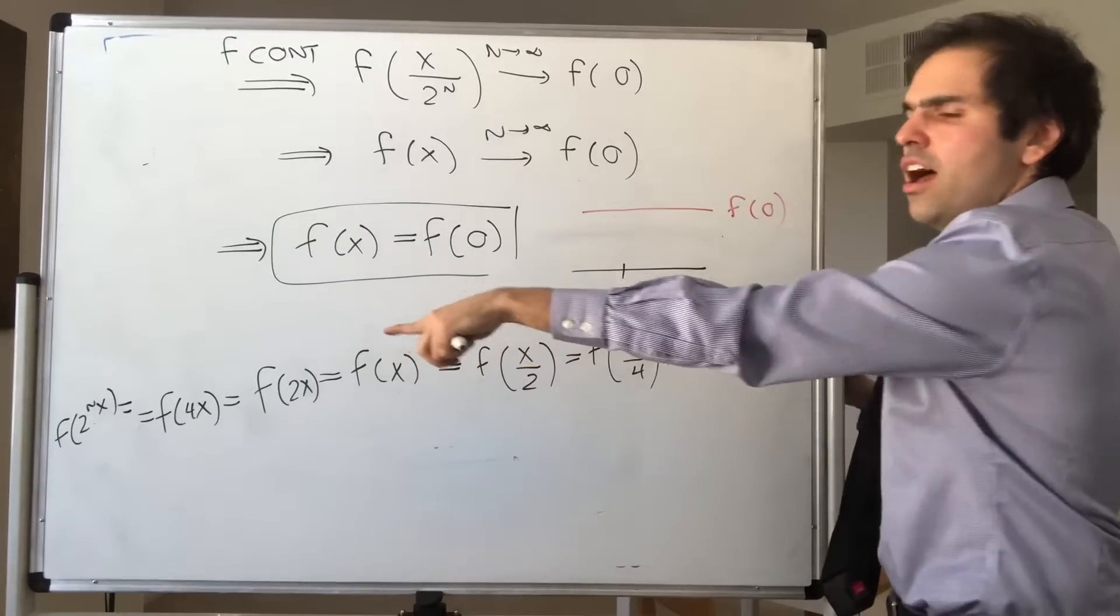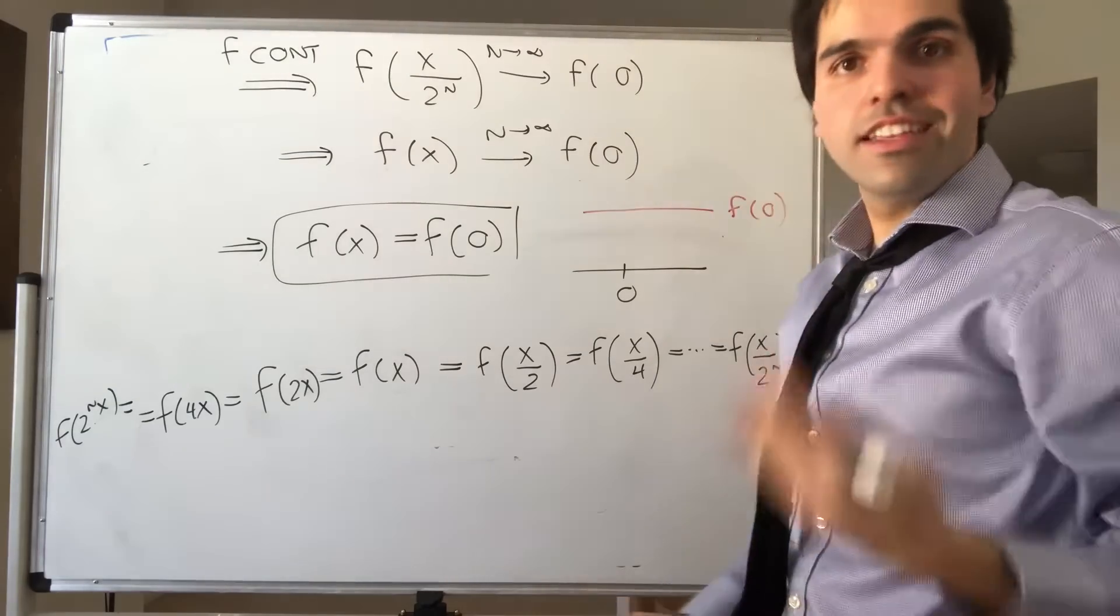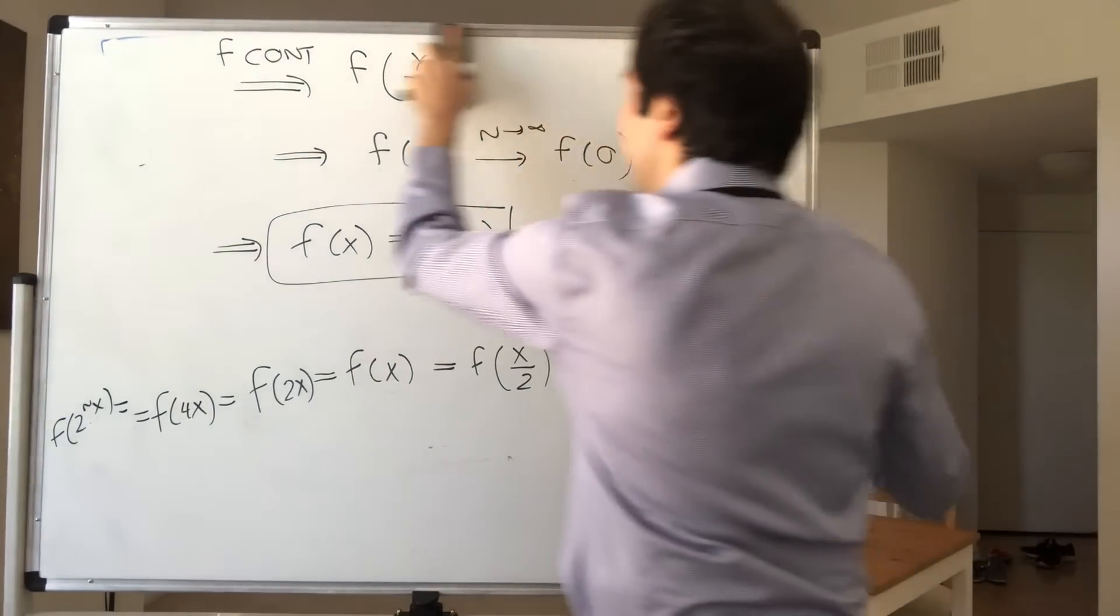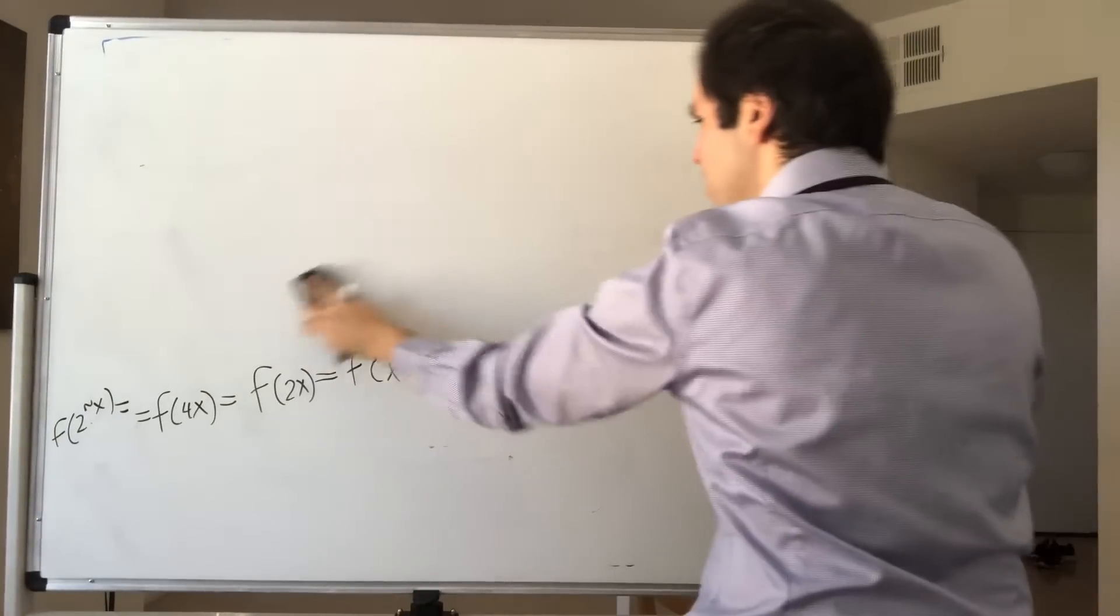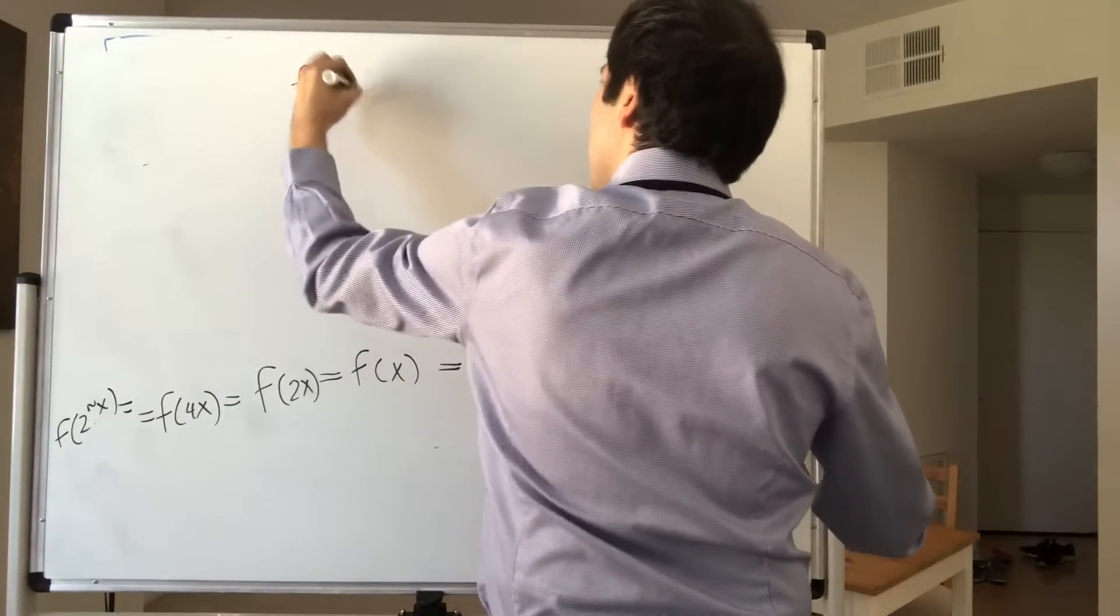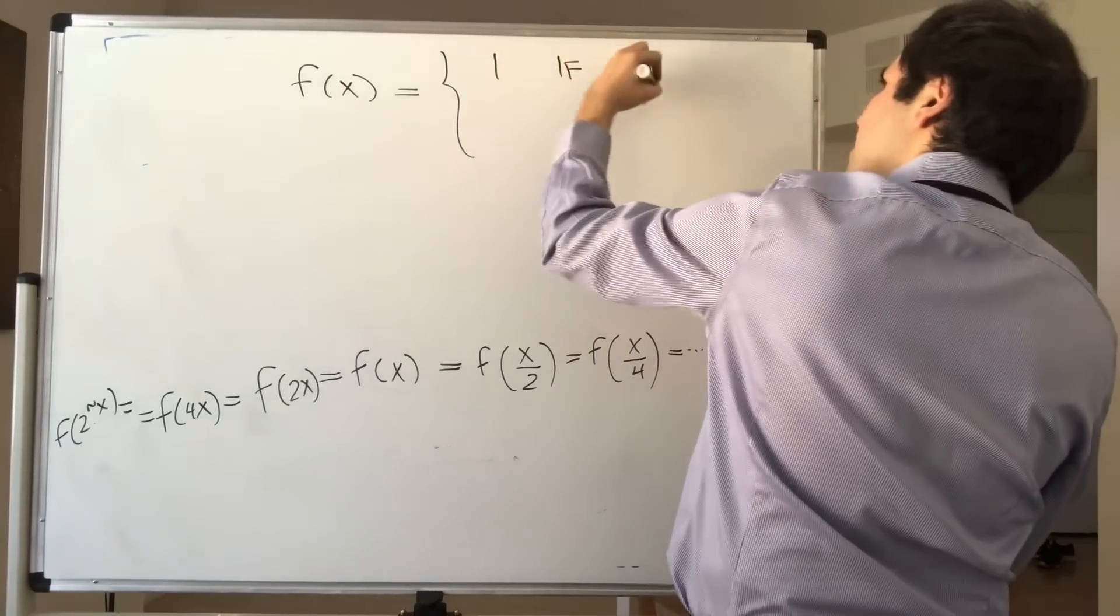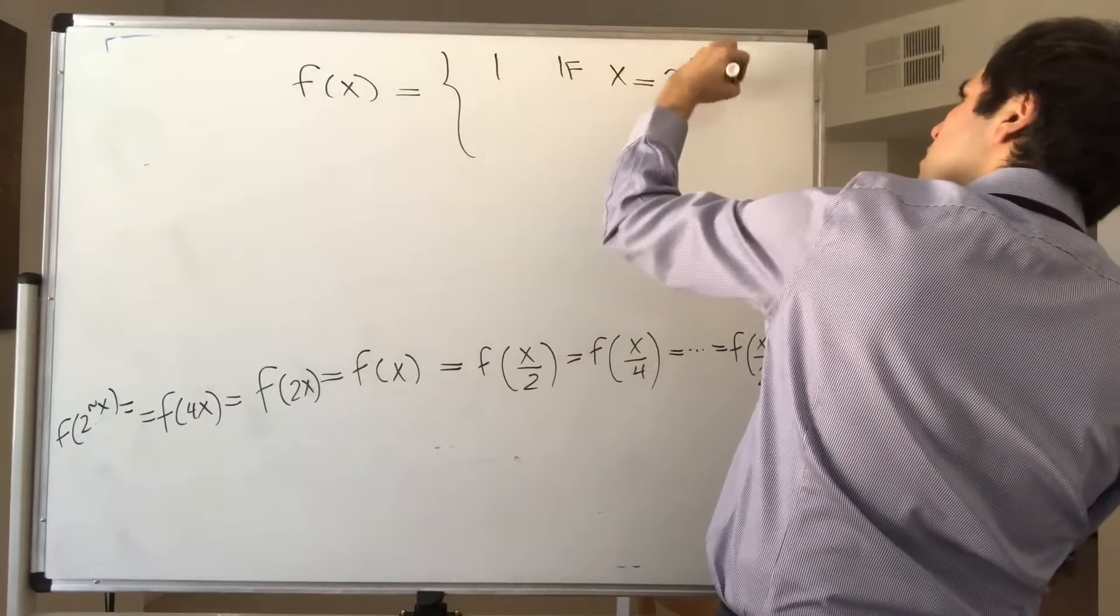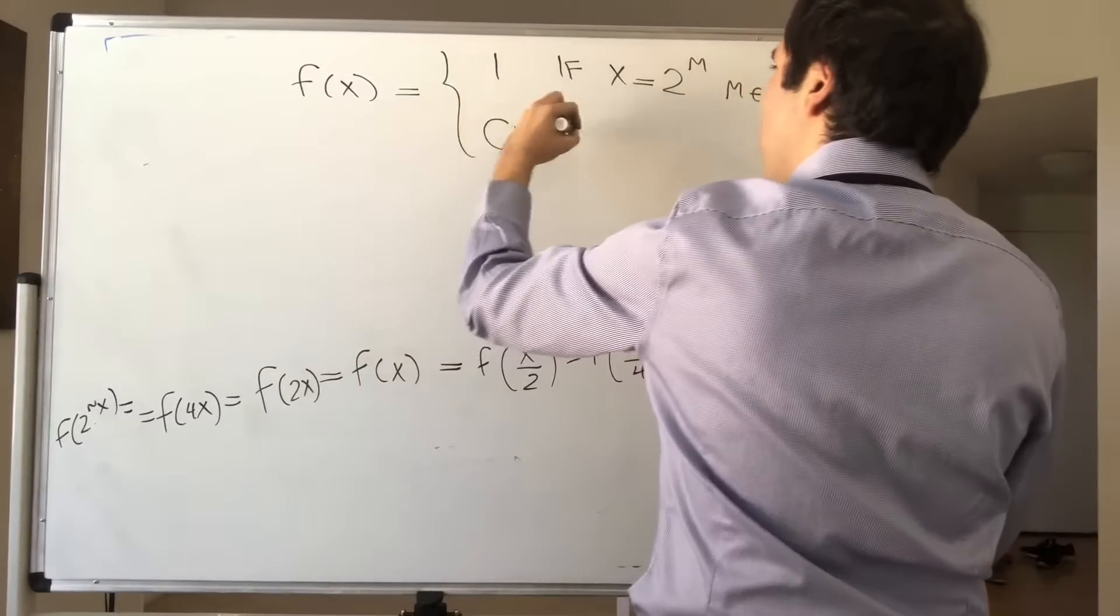So, for instance, an example of a function that's not continuous but that satisfies this is the following function. Take f of x to be 1 if x is some power of 2, positive or negative, and 0 otherwise.